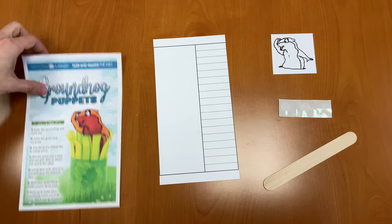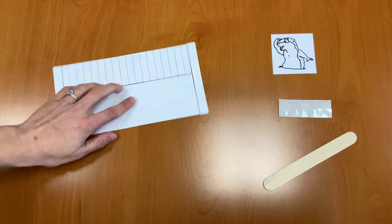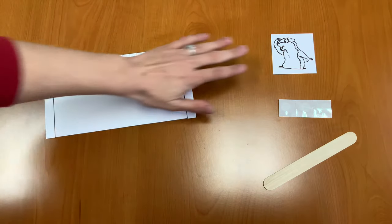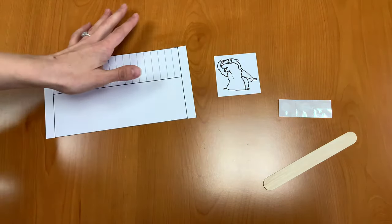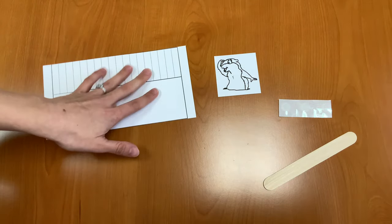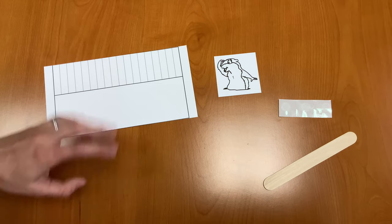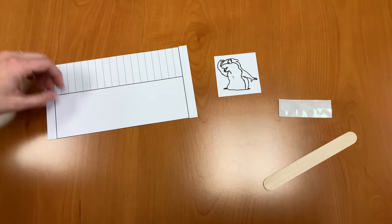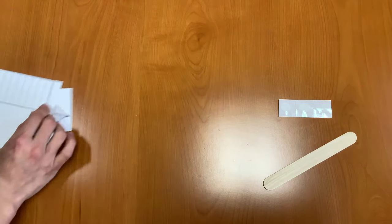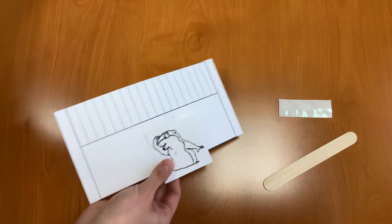Our first step is going to be to color your grass green and color your groundhog brown. So you can use whatever colors you like, you don't have to do green and brown, you can make them rainbow colored if you want to, you can use crayons or colored pencils, but once you have those colored, you're going to cut them out.